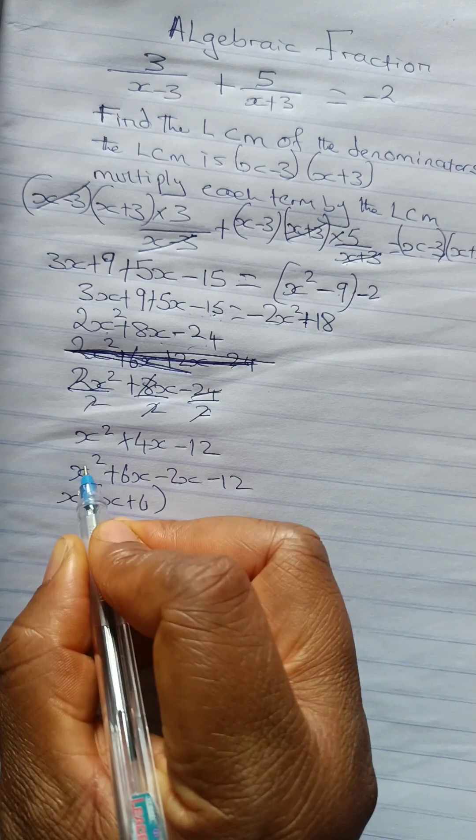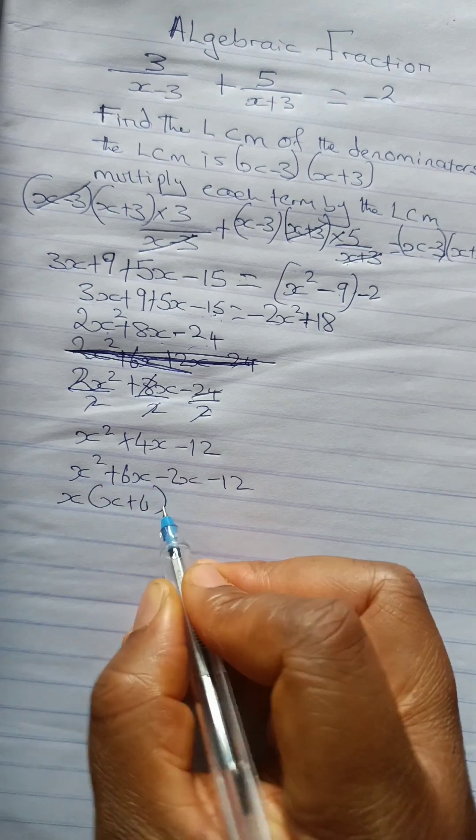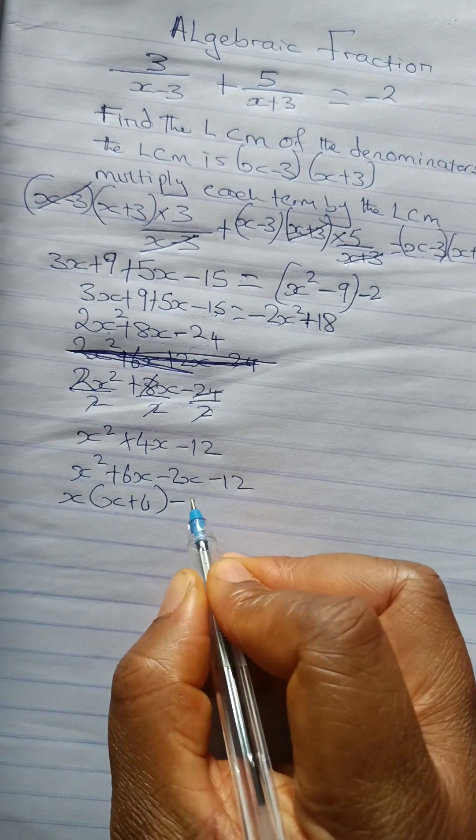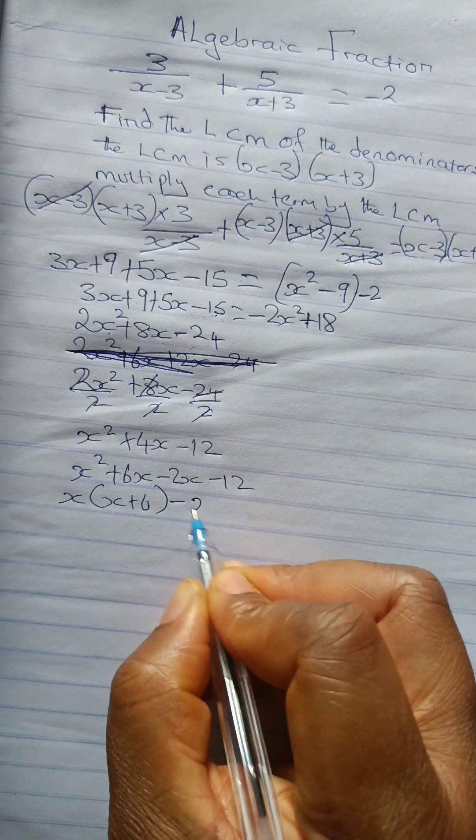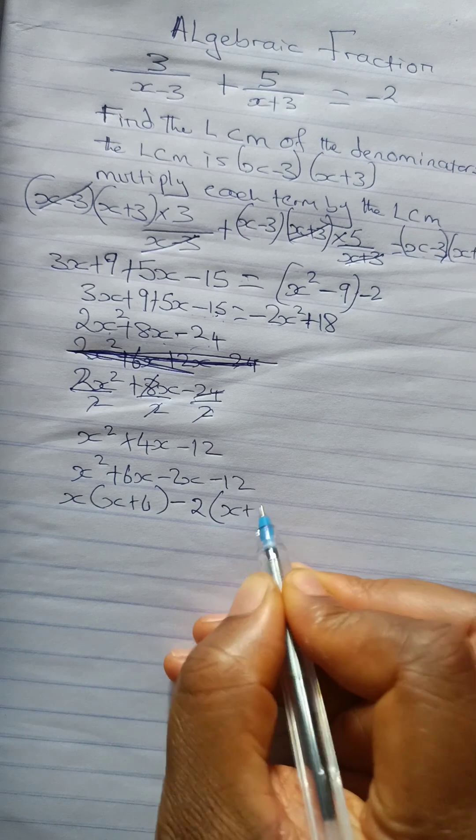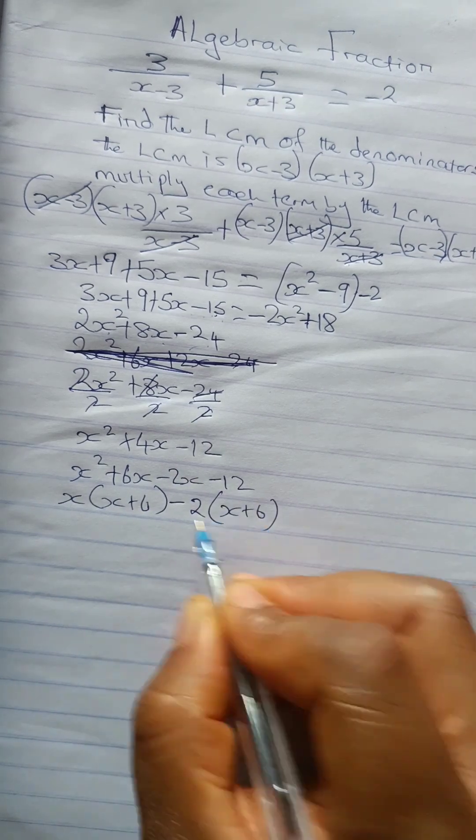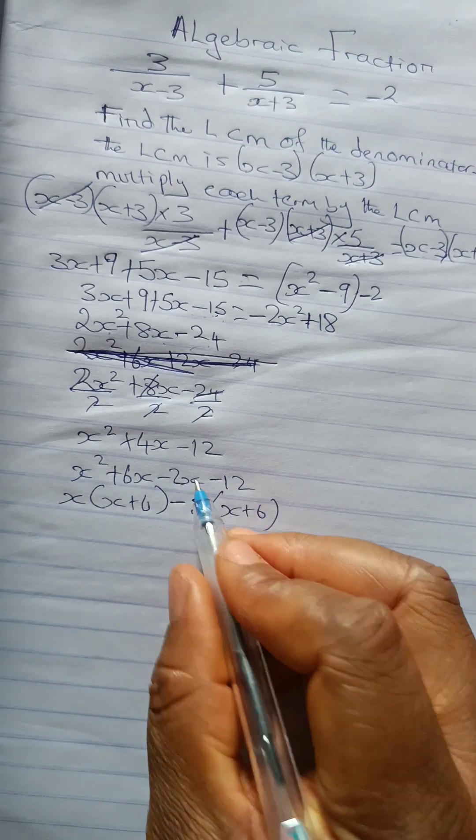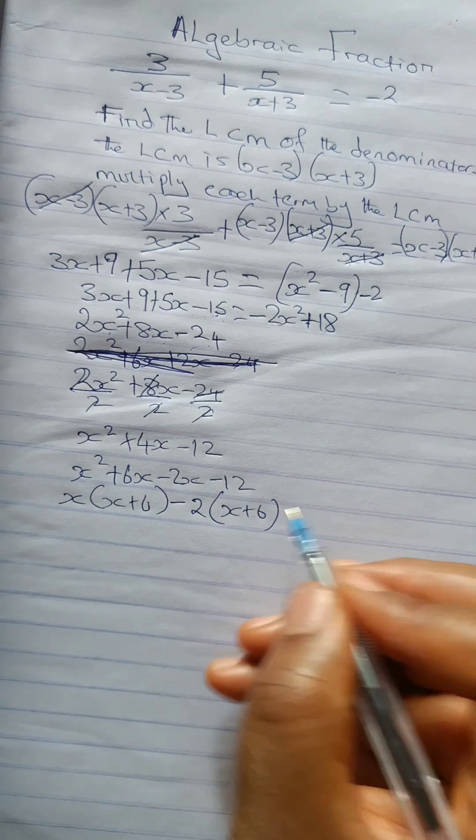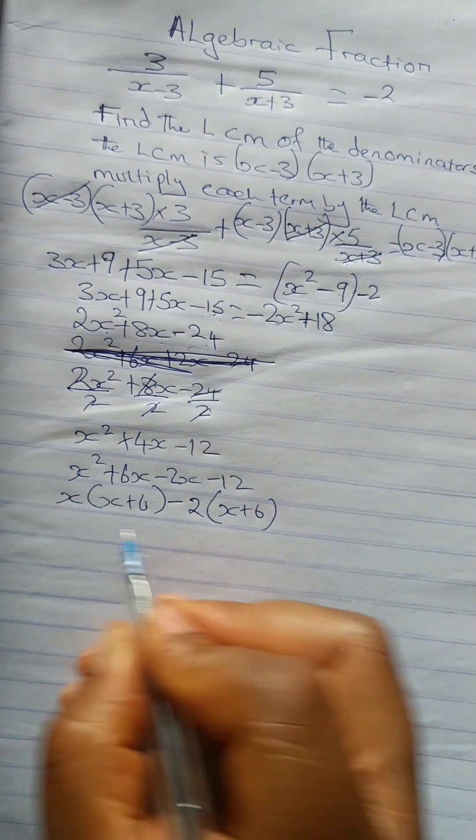So x times x, x squared, x times 6, 6x. Now what can we use here? 2. x plus 6. Because what you have here, you must have here. So 2 times x, 2x. This times this. So since we have this,